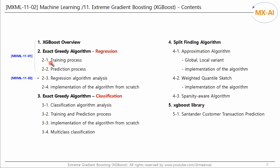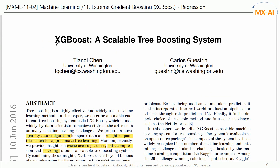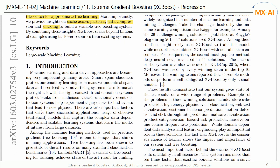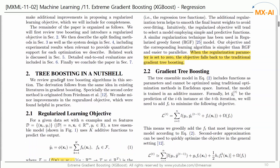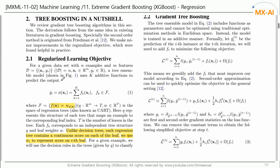In the last video, we looked at the training and the prediction process for XGBoost regression. In this video, we will analyze the algorithm for these processes in detail. Section 2 of the paper introduces the basic algorithm of XGBoost. Section 2.1 introduces the regularized learning objective, and Section 2.2 introduces the formulas used in the previous video.